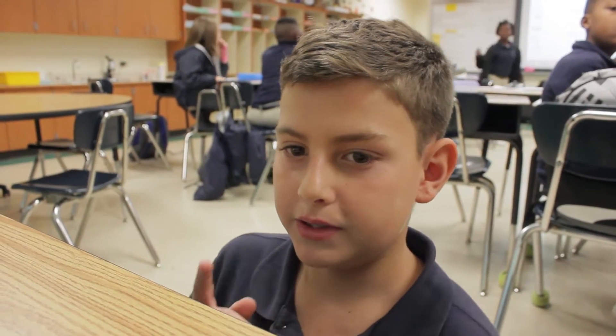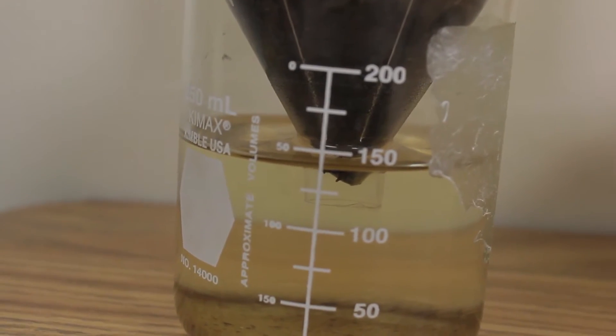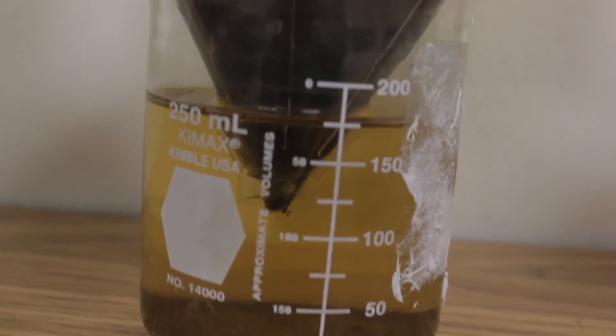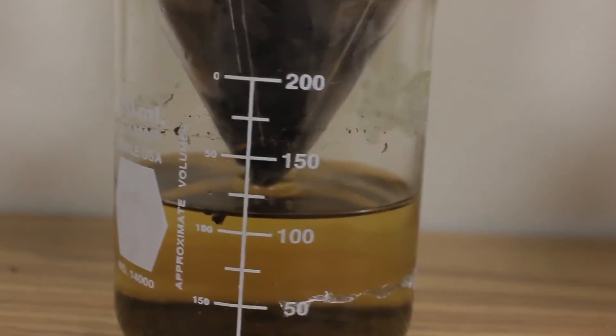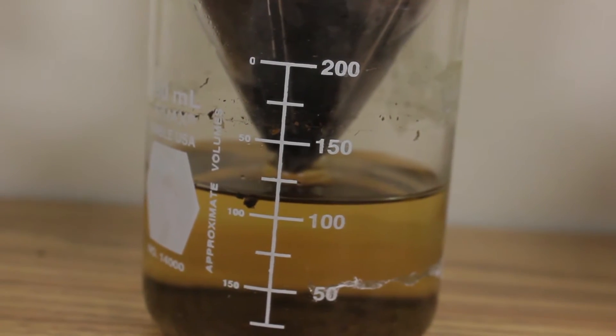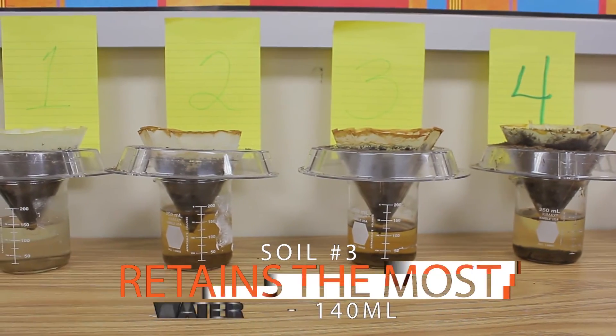The reason it's important for the soil to keep in the water is because whenever it rains or we water the plant, the water can normally just go down to the bottom. But with soil three, it holds in the most water and allows the roots of the plants to soak up the water, bring it to the stem, and make food for the plant.